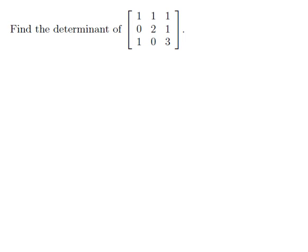Find the determinant of the 3x3 matrix 1, 1, 1, 0, 2, 1, 1, 0, 3. We're going to use the method of expanding along rows and columns, and we're going to do it twice to illustrate just how a good choice of row or column can simplify things.